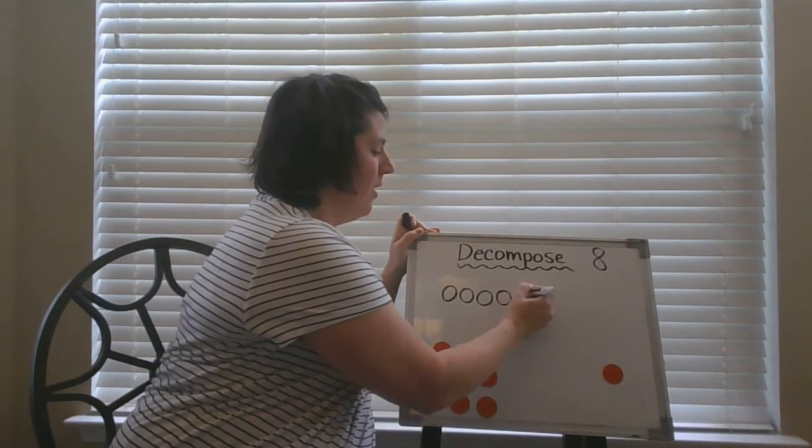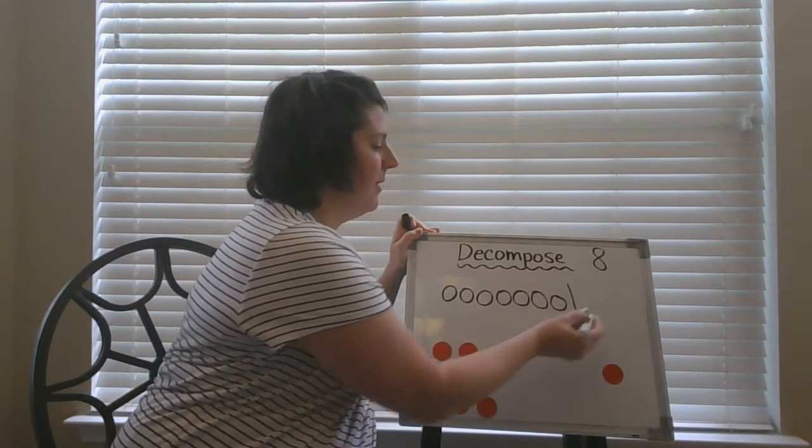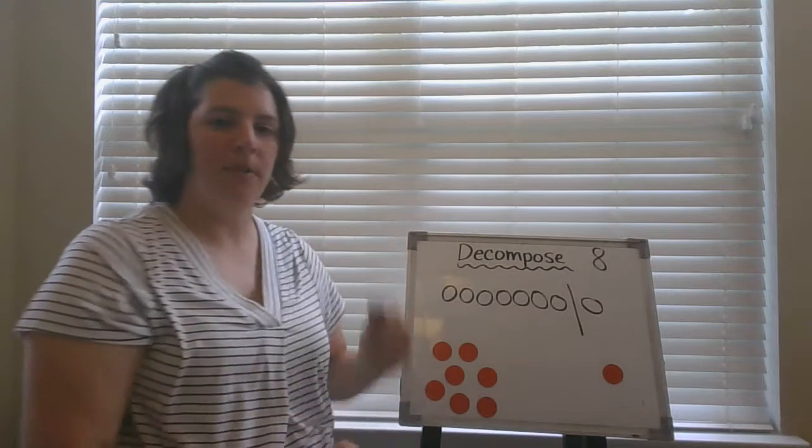Three, four, five, six, seven. There's my first group. I'm going to divide it with the line, and there's my group of one.